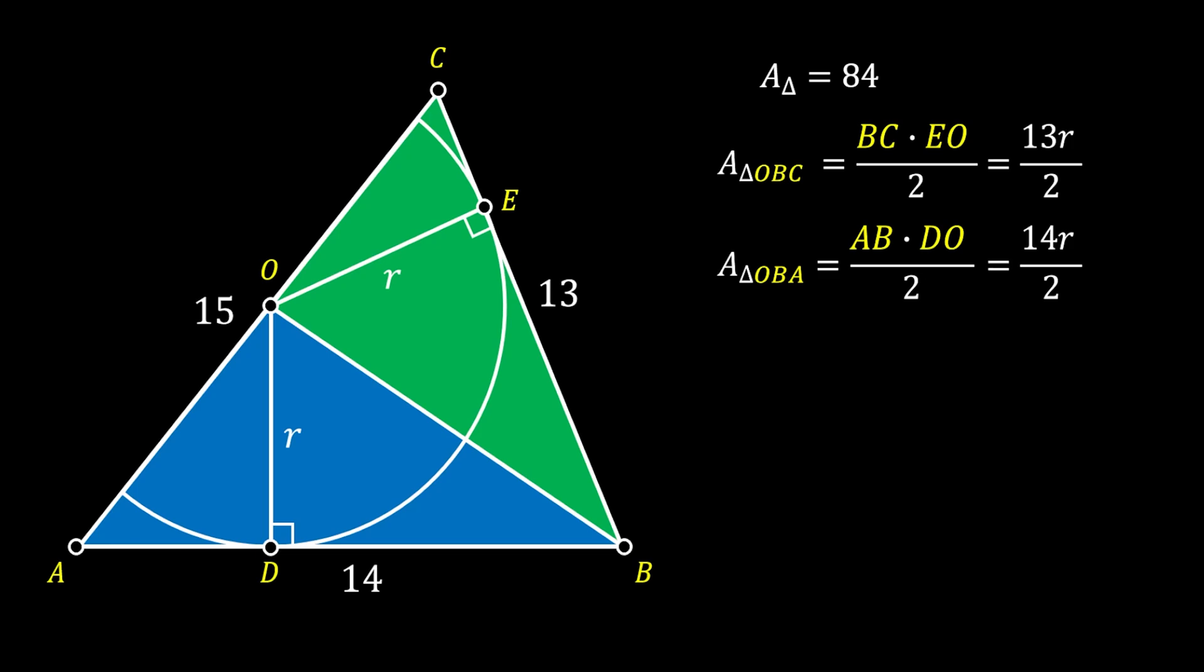Now, you probably already noticed that these two triangles together add up to the area of our big triangle ABC. So, we can use this fact in our favor and get the following equation of 13R over two plus 14R over two that is equal to the overall area of 84.